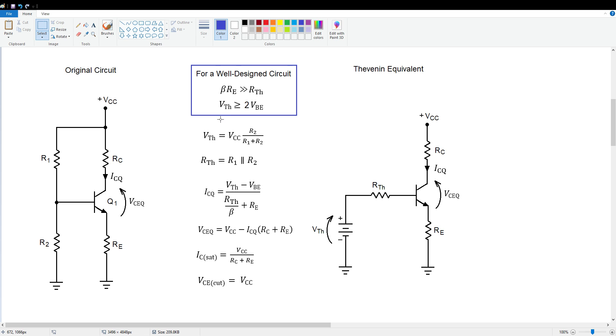Another requirement that's pretty easy to meet is we want the Thevenin voltage to be greater than or equal to two VBE values. That gives us good temperature stability because VBE does change somewhat with temperature. If we make VTH twice that value, it swamps out those changes pretty well.